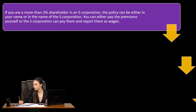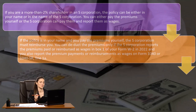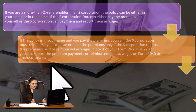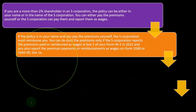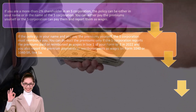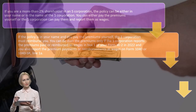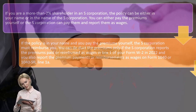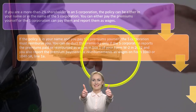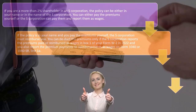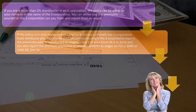If you are a more-than-two-percent shareholder in an S corporation, the policy can be in your name or in the name of the S corporation. You can pay the premiums yourself or the S corporation can pay them and report them as wages. If the policy is in your name and you pay the premiums, the S corporation must reimburse you. You can only deduct the premiums if the S corporation reports the premiums paid or reimbursed as wages in Box 1 of your W-2.